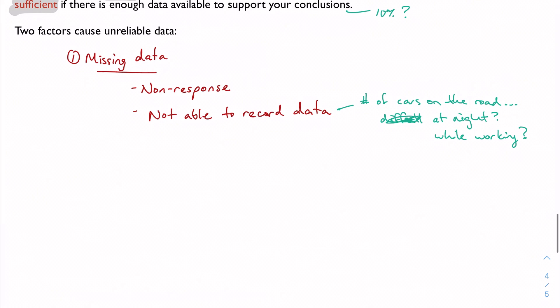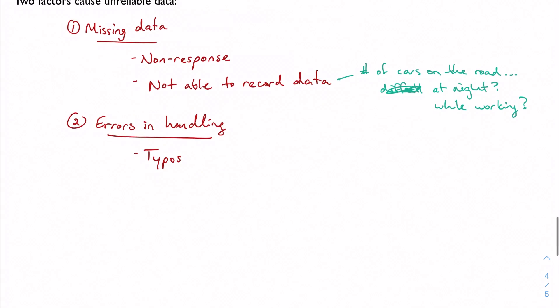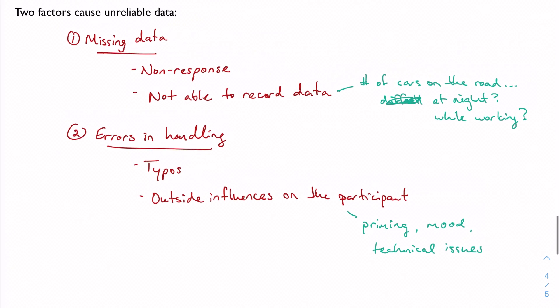The other factor we have are errors in handling your data. So we really want to be careful. I mean, the big one obviously is typos. Just be really careful when you're recording your data. But any sort of outside influence, especially on the participant, is going to cause some kind of an error. So maybe you are inadvertently priming them to respond a certain way. You're kind of amping them up or playing with their mood, their emotions. Maybe if it's a survey, you have some kind of technical issue, things like that are going to also cause problems and things like that are also going to either give you insufficient or unreliable data. And in either case, you have to be careful.